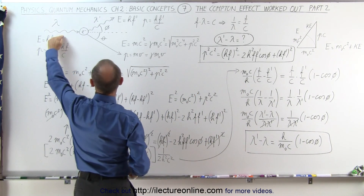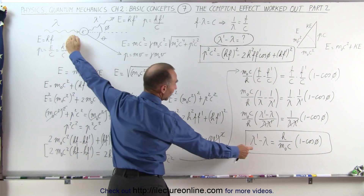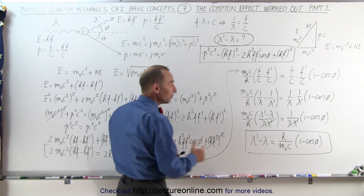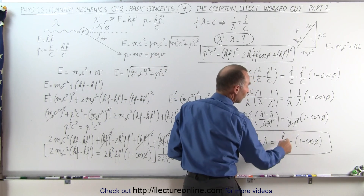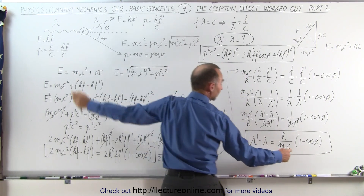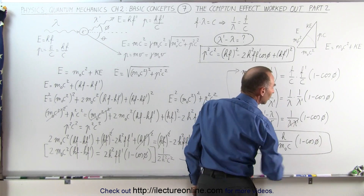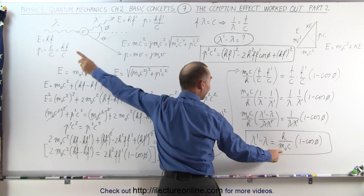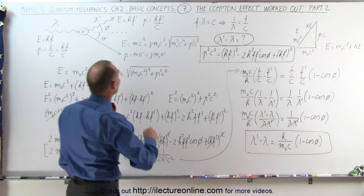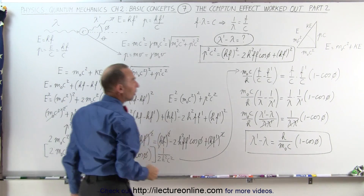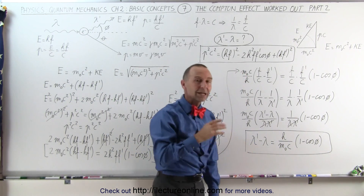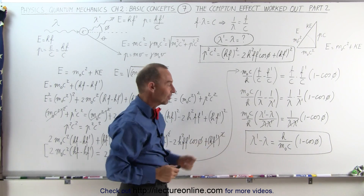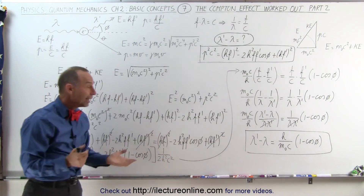Moving H over and M sub-naught C to the denominator, we can now write that lambda prime minus lambda equals H divided by M sub-naught C times the quantity 1 minus the cosine of phi. This is the equation that defines the change in the wavelength of a photon scattered off of an electron. We have an incoming photon with wavelength lambda, and an outgoing scattered photon with wavelength lambda prime — a longer wavelength because it lost energy. The difference in wavelength equals Planck's constant divided by the mass of the electron times the speed of light, times 1 minus the cosine of phi. The difference depends on two things: the mass of the scattered particle, and the scattering angle of the photon. The larger the scattering angle, anywhere from 0 to 180 degrees, the larger the difference in wavelength. This is known as the Compton scattering effect.